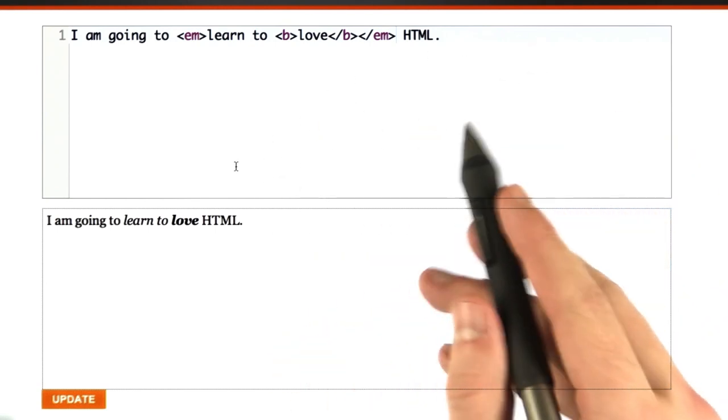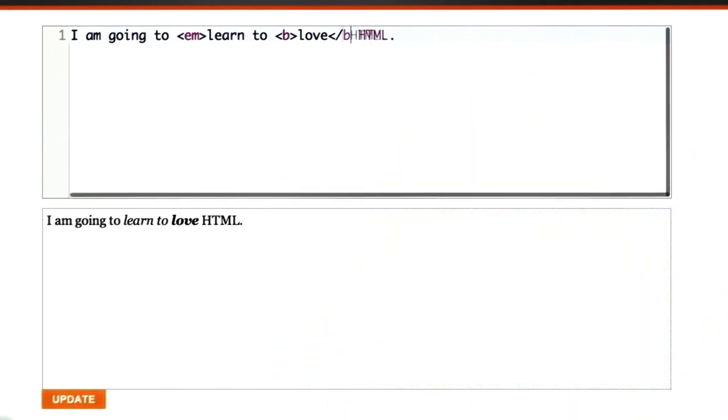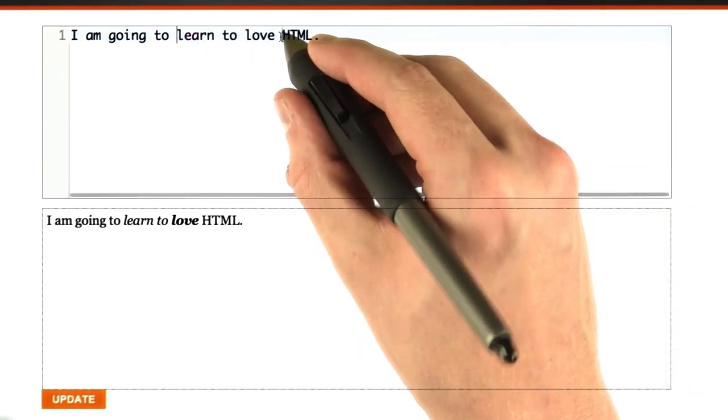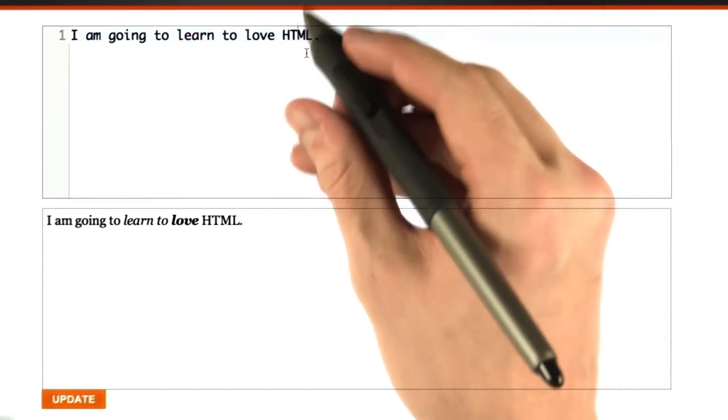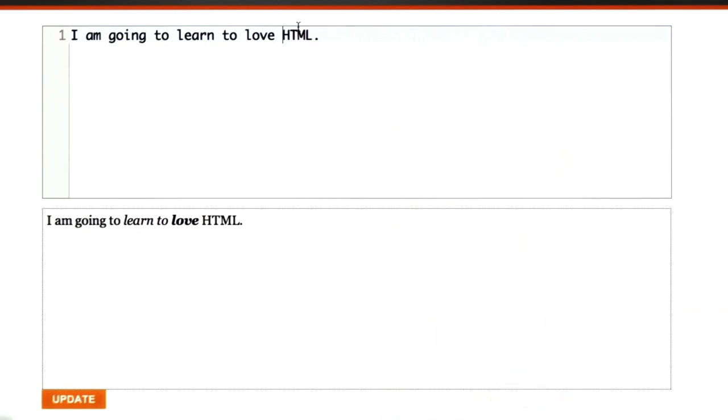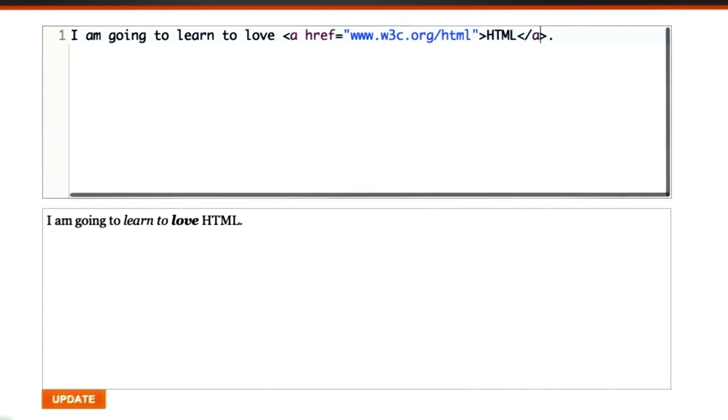Okay, so we've got our HTML from before. I'm going to clean out some of these tags here so we have a little bit more room to work. Let's make the words HTML here a link. So we're going to make an opening A tag, an href to www.w3c.org.html, and a closing A tag.